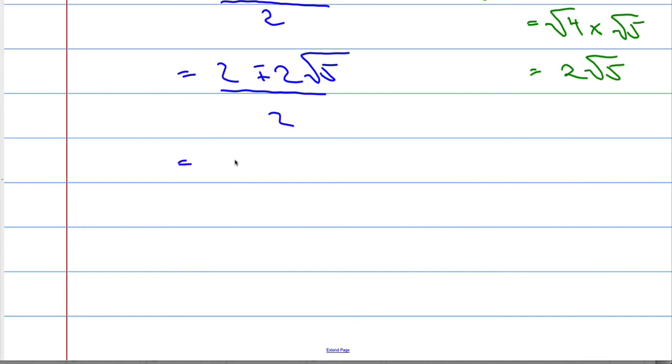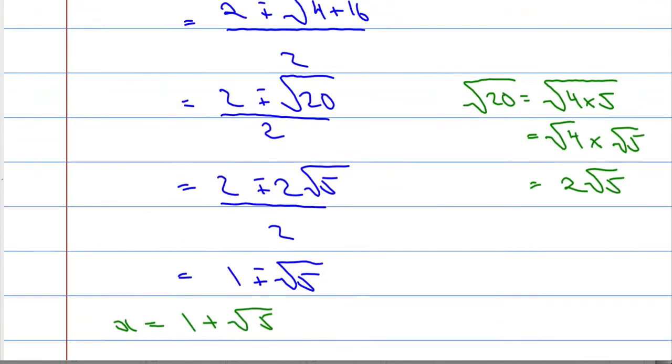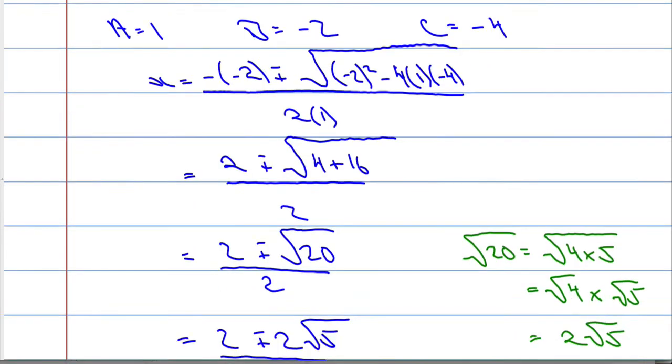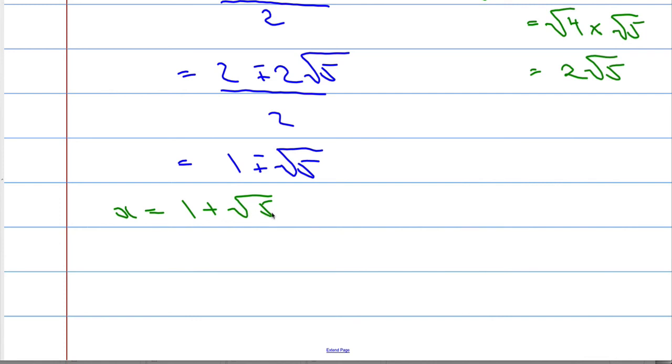So we get 2 plus or minus 2 root 5 all over 2. Dividing everything by 2, we get 1 plus or minus root 5. So that means x equals 1 plus the square root of 5. And let's just go all the way back. Given your answer in the form a plus root b where a and b are integers, it is a plus root b and a and b are integers. And that's it for this paper. Hopefully you found it useful. I'll be back with another one soon. All the best and good luck with your exams.